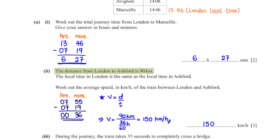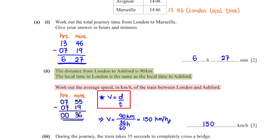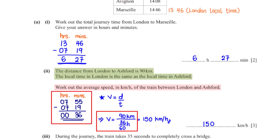The distance from London to Ashford is 90 kilometers. The local time in London is the same as the local time in Ashford. Work out the average speed in kilometers per hour of the train between London and Ashford. The speed is the distance divided by the time taken. The time duration is 7:55 minus 7:19. In the minutes column, 55 minus 19 is 36. In the hour column, 7 minus 7 is 0. So the time duration is 36 minutes.